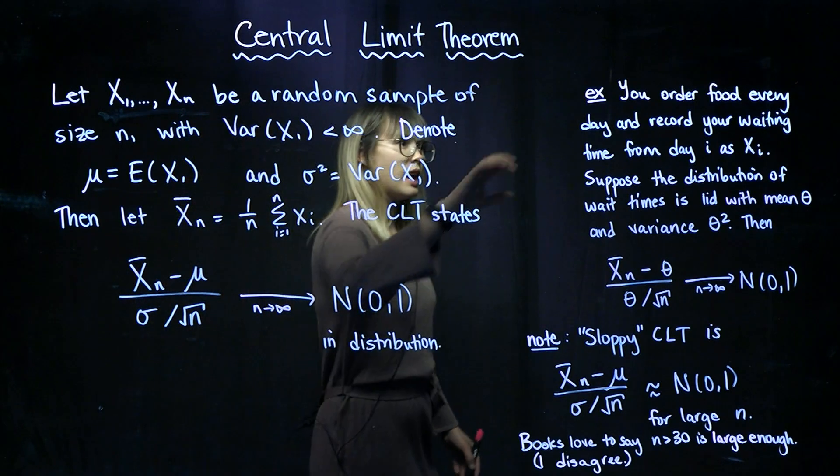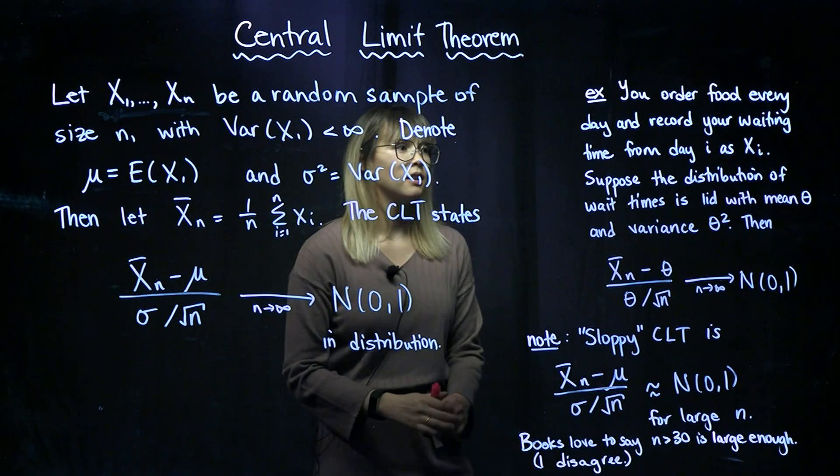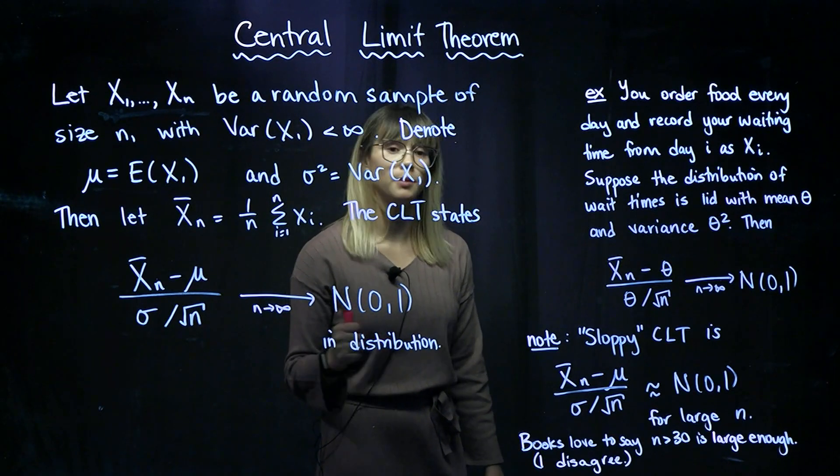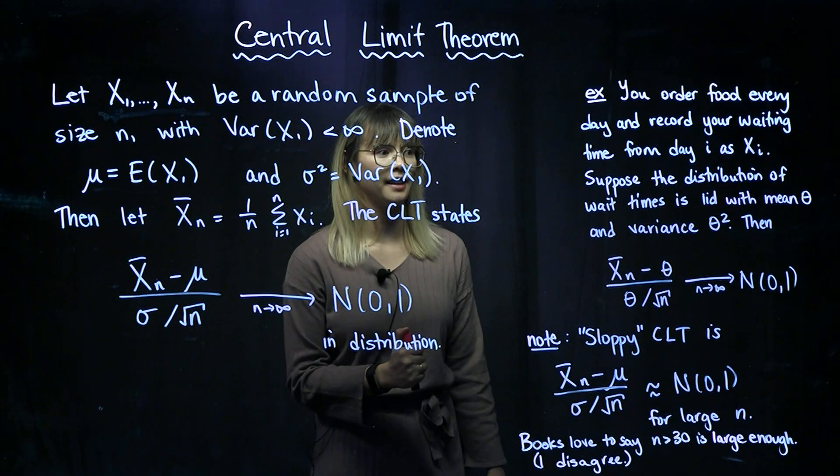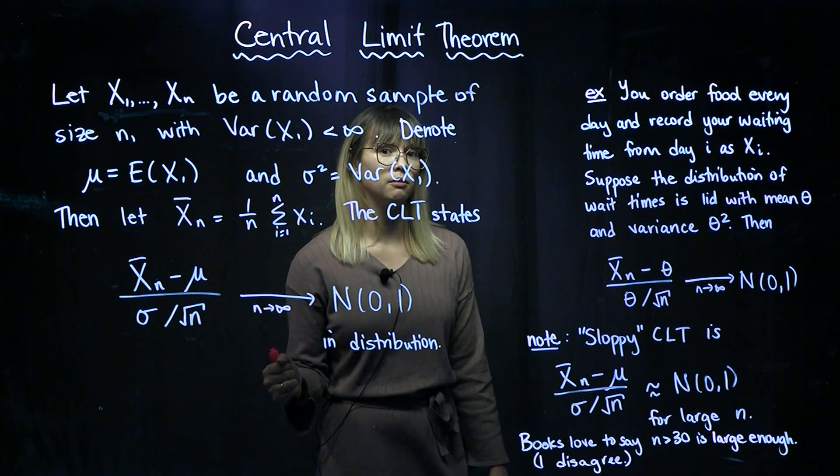Alright, so let's do a little example with this one. So you order food every day, and you record your waiting time from day i as xi. Now suppose the distribution of wait times is iid. So in other words,